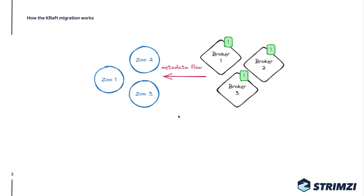We are starting from a situation where we have an Apache Kafka cluster with three brokers using a ZooKeeper ensemble made of three ZooKeeper nodes in order to store the metadata for the cluster. By metadata we mean the cluster membership, which brokers are in the cluster, which broker is the controller, and information about topic configuration, ACLs, quotas for handling CPU and network resources — all the cluster metadata is stored in ZooKeeper.